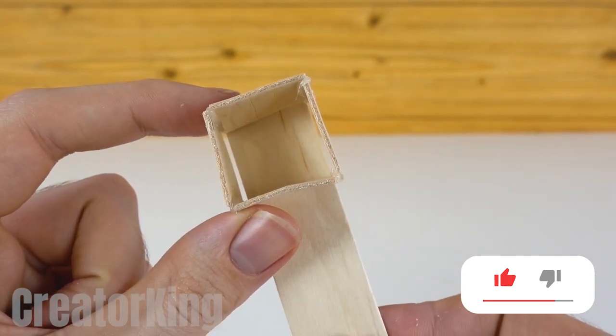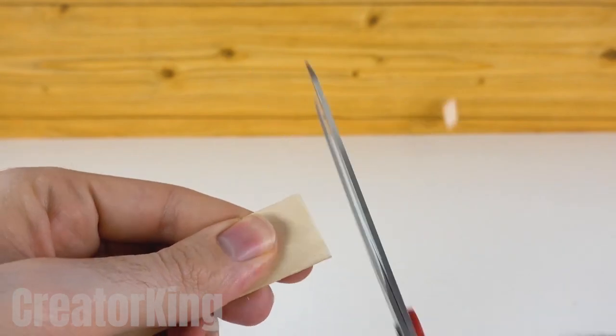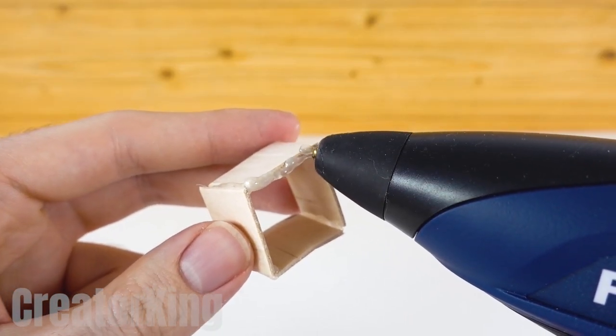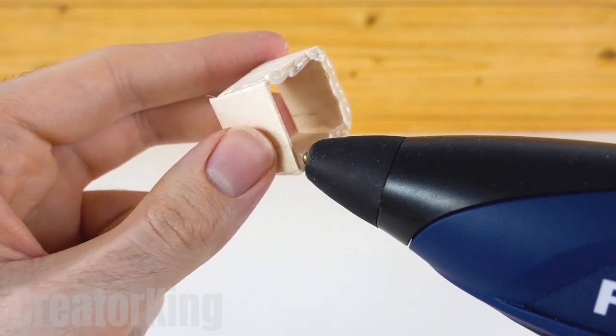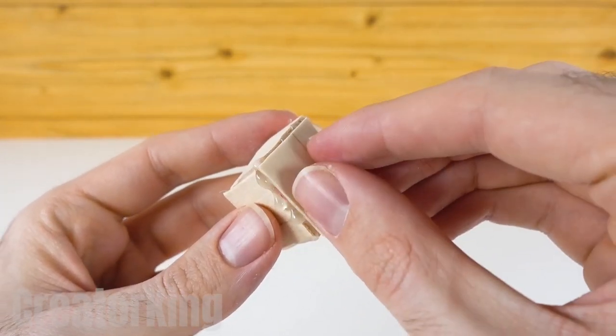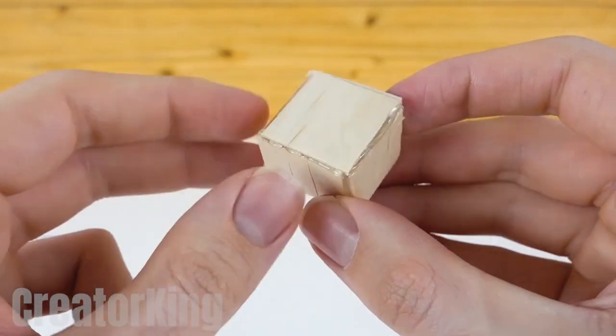Mark the measurement of the square on the rest of the popsicle stick and cut it. Glue it to the bottom of the square with lots of hot glue. Don't forget to clean the extra glue from the edges. Now it looks better.